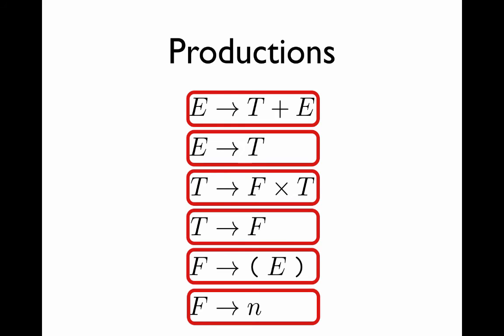The fourth rule says that a term may be a factor. The fifth rule says that a factor may be a left paren, followed by an expression, followed by a right paren. The final rule says that a factor may be a number.